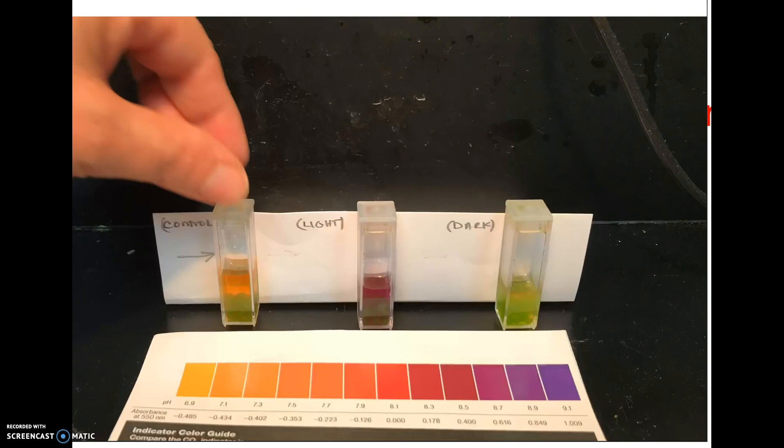This is our control. This is what it looked like when it started. If you weren't sure what pH it was when you started, it really should have been about 7.3, between 7.3 and 7.5. Some people thought it was lower, but it's kind of hard to tell with the beads in there and not a lot of liquid and you're trying to hold it up. So this is the control.